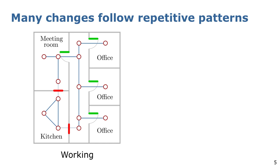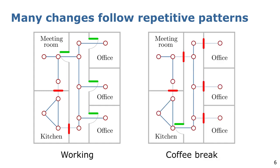In indoor environments, many changes often happen by following repetitive patterns. For example, in an office, the office's doors are open while people are working. Whereas, if the kitchen is open, it's likely that people are enjoying a coffee break and so that the office's doors are closed.